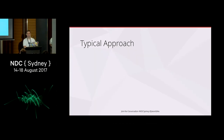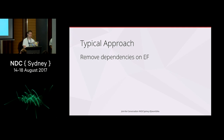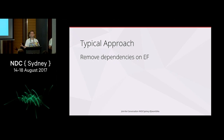So what is the typical approach? It has four steps. The first is we need to remove all of our dependencies on EF. If we have dependencies on EF then that typically means we've got a dependency on an external database. Our unit tests cannot access external resources because that's going to slow down our whole test suite, and we're not going to run those tests. They need to be fast so that we can get feedback quickly.